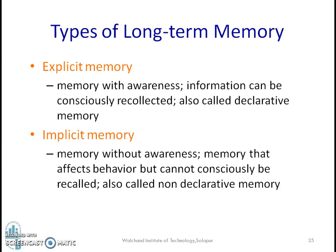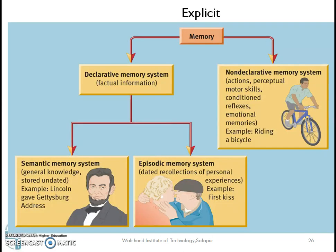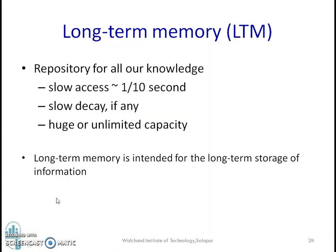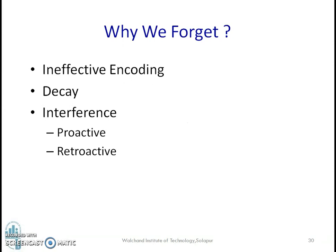There are two types of long-term memory: explicit memory and implicit memory. Explicit memory is further divided into semantic memory and episodic memory. Episodic memory involves episodes we remember, like a first birthday, first wedding anniversary, or first day at school. Semantic memory is related to general knowledge where you have meaning attached. We forget because of two main things: ineffective encoding and the decay process, and the second reason is interference, which may be proactive or retroactive.